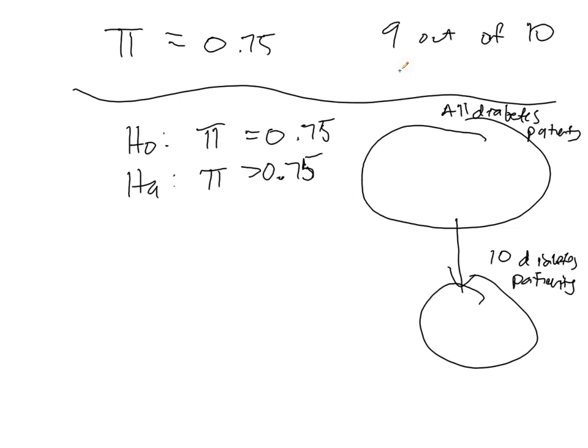So we're probably going to see a little bit of variability. 9 out of 10, hey, that seems great, but is that high enough to conclude that the null hypothesis is false?